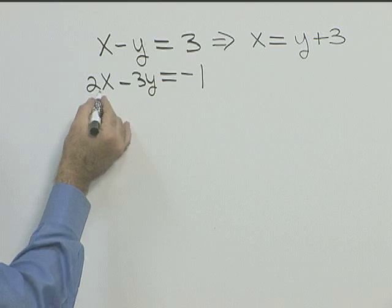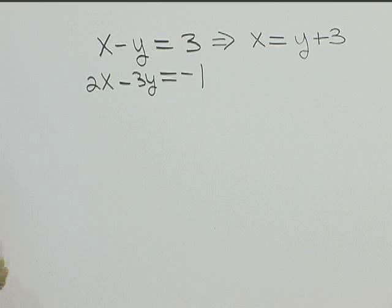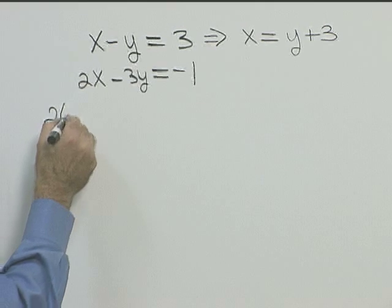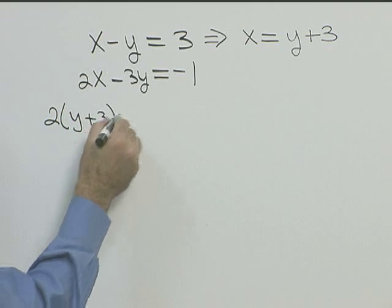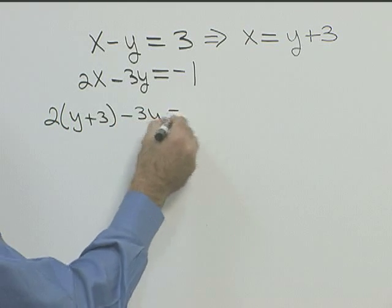So now that we have x, let's put that in place of x in the second equation. So this will be two times y plus three minus three y equals negative one.